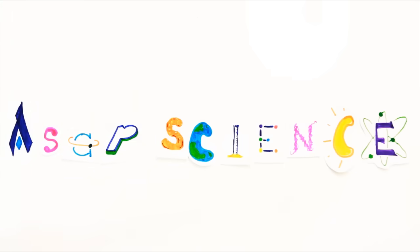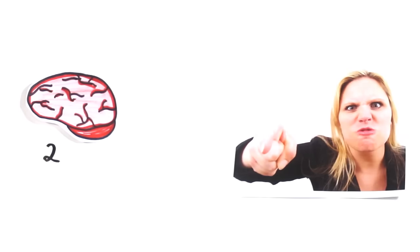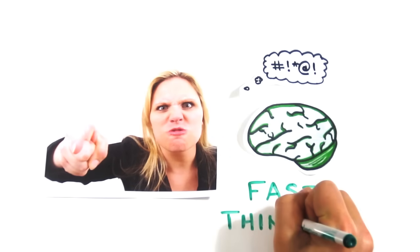You may not realize it, but your brain actually processes information in two very distinct ways. Like when you look at this photo, you instantly know she has blonde hair, is visibly angry, and likely has some choice words to yell. Without any effort, you experienced fast thinking.